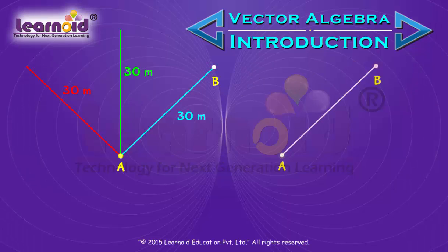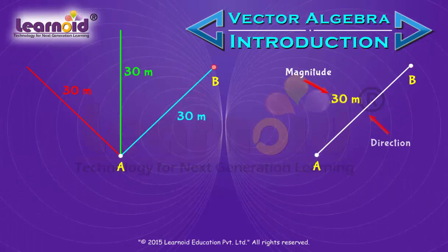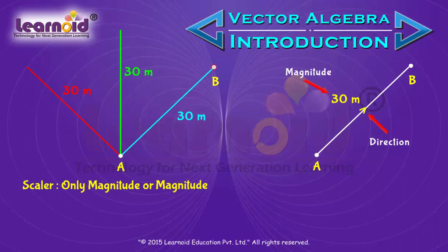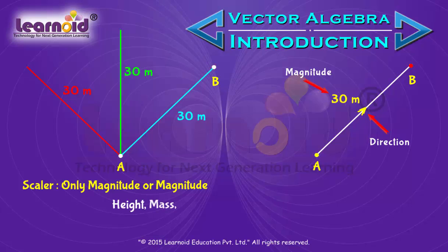So it is very important to know distance as well as direction of movement. The quantities which require only value or magnitude are called scalar. For example, height, mass, temperature, time, etc. are scalar quantities.